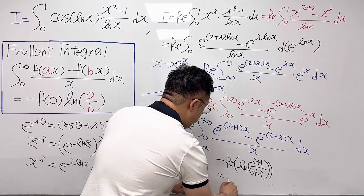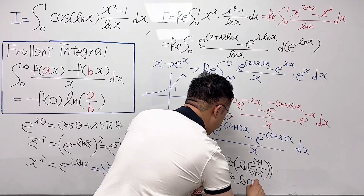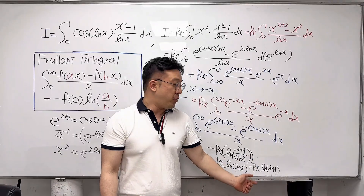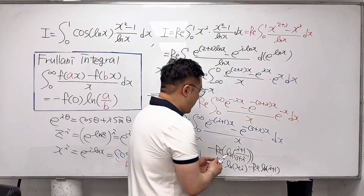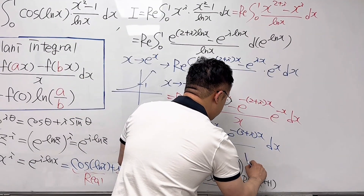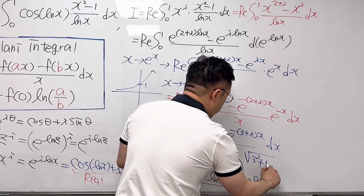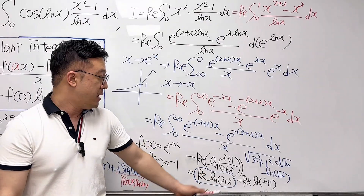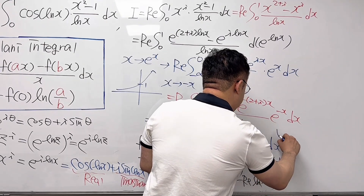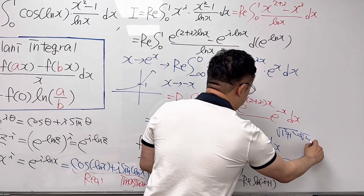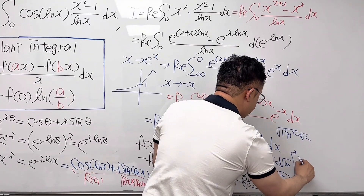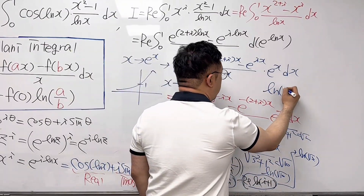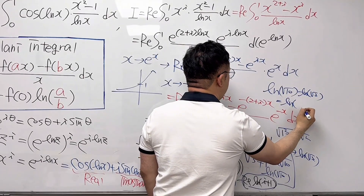Applying the negative sign, this equals the real part of ln(3+i) minus the real part of ln(i+1). The real part of a complex logarithm is the ln of the modulus. So the real part of ln(3+i) is ln(√(3²+1²)) = ln(√10). And the real part of ln(i+1) is ln(√(1²+1²)) = ln(√2). So we're working on ln(√10) minus ln(√2), which equals ln(√5).